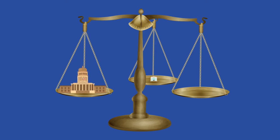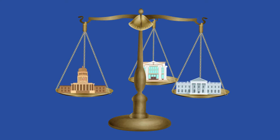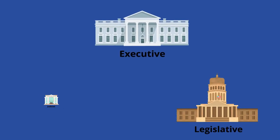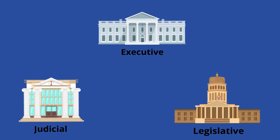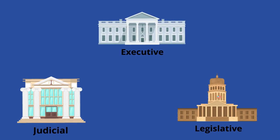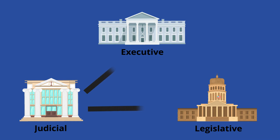Through this system, the three branches of government — executive, legislative, and judicial — check each other's power and maintain a balance of influence. One component of the system of checks and balances is the Supreme Court's ability to check the actions of the executive and legislative branches through a power called Judicial Review.